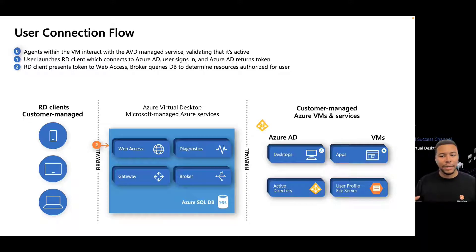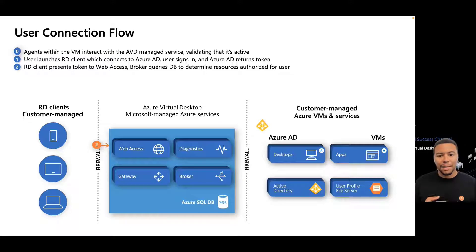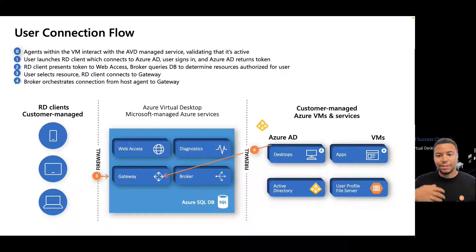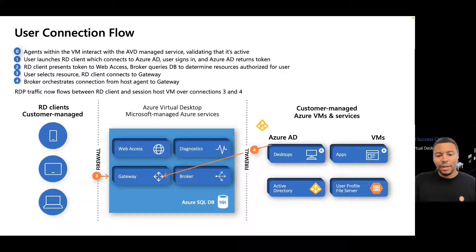The broker then queries the database to determine that these resources are authorized for this user. Then the user selects the resource designated to them, and the remote desktop client connects to the gateway. The broker then orchestrates the connection from the host agent to the gateway, and the RDP traffic can now flow freely between the remote desktop client and the session host virtual machine over connections three and four.